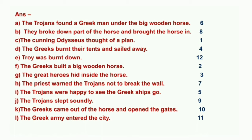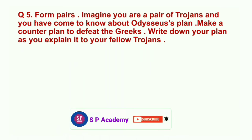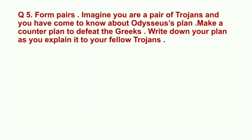(k) The Greeks came out of the horse and opened the gates — 10th. (l) The Greek army entered the city — 11th. Next, Question number 5: Form pairs. Imagine you are a pair of Trojans and you have come to know about Odysseus's plan. Make a counter-plan to defeat the Greeks. Write down your plan as you explain it to your fellow Trojans.